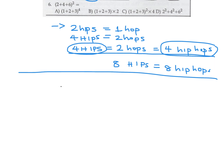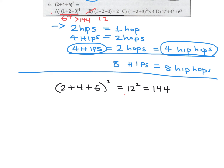Number 6: (2+4+6) all squared. That first expression is 12 squared, which is 144. We have to figure out which answer choice is equivalent to 144. 6 times 2 is just 12, not that. 6 to the power of 4 would be 36 squared, much greater than 144. But 6 squared times 4 is 36 times 4, which is 144. That's the one — so C.